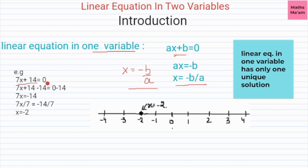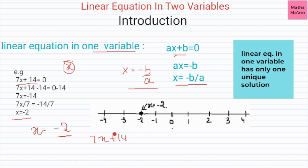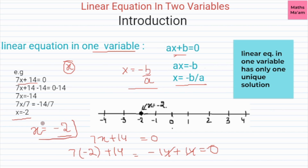For example, if we take 7x plus 14 is equal to 0, this is an equation in one variable x. To find the value of x, we move 14 to the right side — subtracting 14 from both sides, we get 7x equals minus 14, so x equals minus 2. This means x can have only one value, that is minus 2. If we substitute x equals minus 2, we get minus 14 plus 14, which equals 0. So this equation is true for only one value of x.